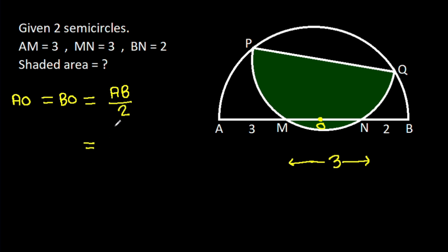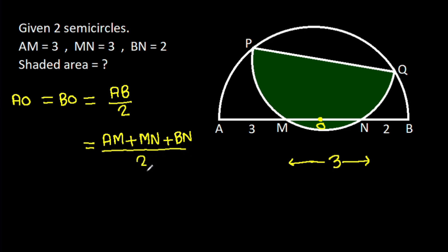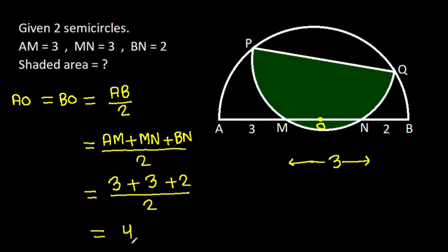And AB, it is AM minus MN minus BN, over 2. And it is 3 minus 3 minus 2, over 2, that will be 4.